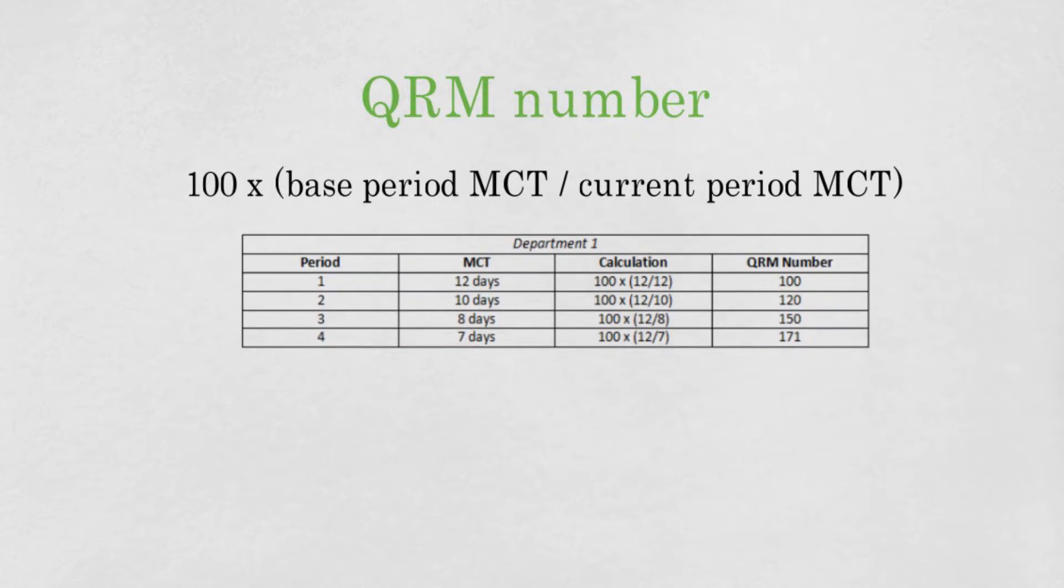So, for example, if you start with a department which has an average MCT of 12 days, you could get the following progress. As you can see, improvements by the team result in the MCT curve going down and the QRM number curve going up.